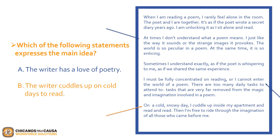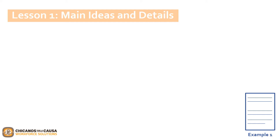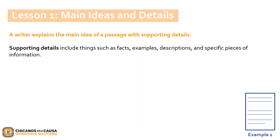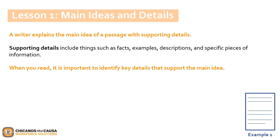Now let's go ahead and move on to the backbone of any main idea: its supporting details. While a main idea makes a statement on its own, supporting details act as additional enforcers of the key message. Our writer explains the main idea of a passage with supporting details. Supporting details can include things such as facts, examples, descriptions, and specific pieces of information. When you read, it's important to identify the key details that support the main idea. This is incredibly helpful, particularly for things that are more challenging to understand. You can start seeing patterns of what the main idea is based on how much supporting detail is incorporated into each passage, book, or paragraph.